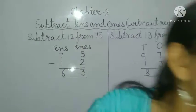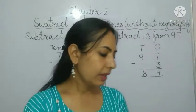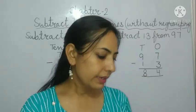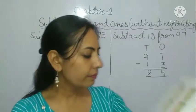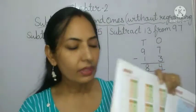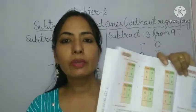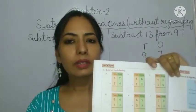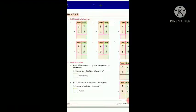Now class, we will do 'Let's Try 4.' Open your books to page number 13 and find Let's Try 4. We will do this in your books as well. The question says: subtract the following.